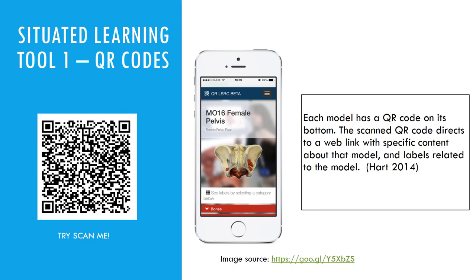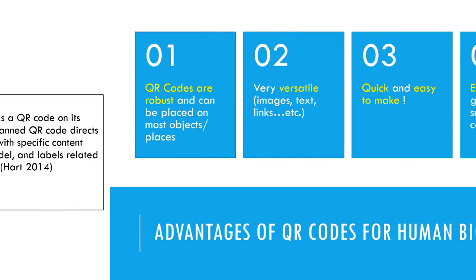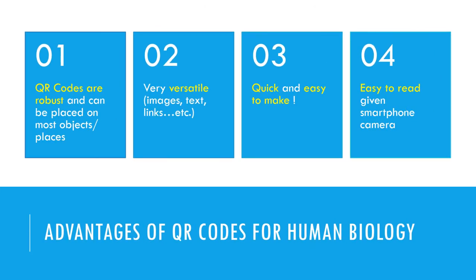Quick response codes are scanned like normal barcodes through smartphone cameras. A way they can be used is sticking them onto anatomy models that redirect to web links containing further multimedia information to advance our learning. Here are some reasons why QR codes would be good to use in human biology study.